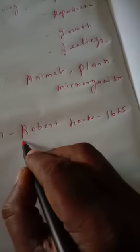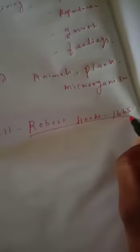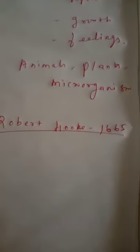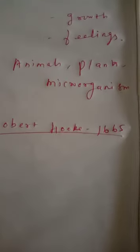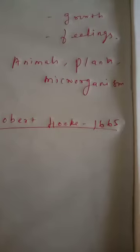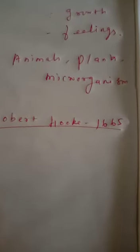Who discovered the cell? The cell was discovered by Robert Hooke in the year 1665. Keep in mind: all living organisms are made up of cells.